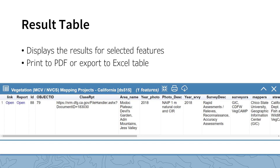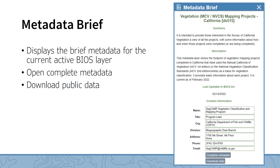Occasionally, datasets will include links to reports or photos as seen in the example here. Clicking on these links will open the document or photo in another tab in your browser. The Metadata Brief tool displays the summarized metadata for the current active BIOS layer. This tool allows you to reopen this panel if it was closed.